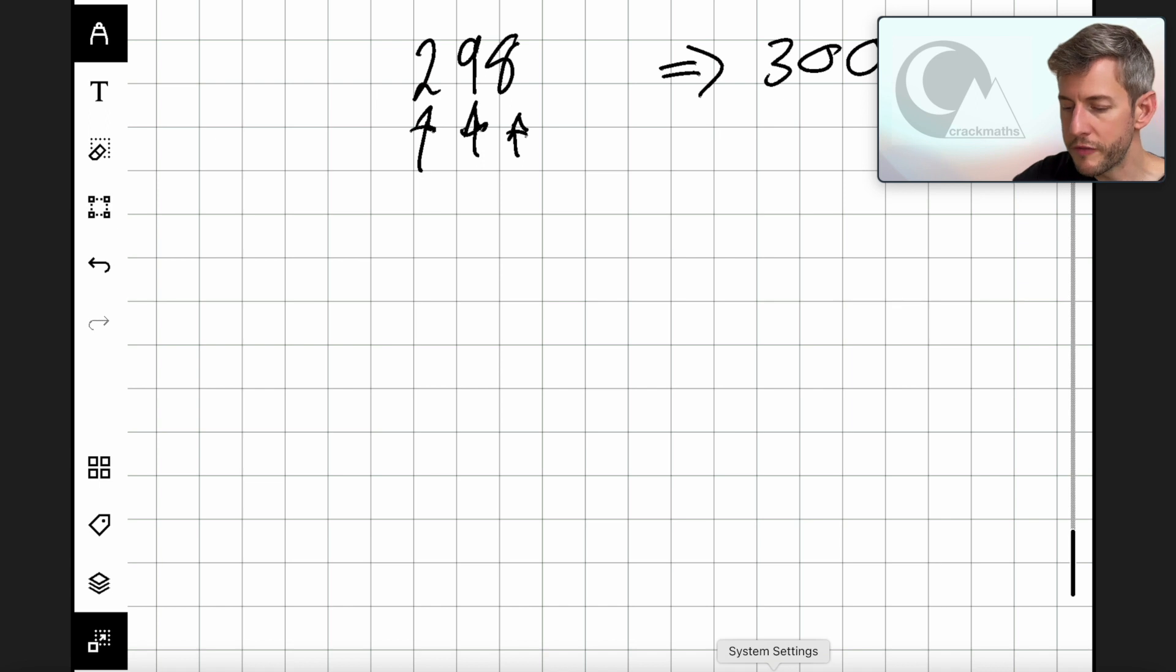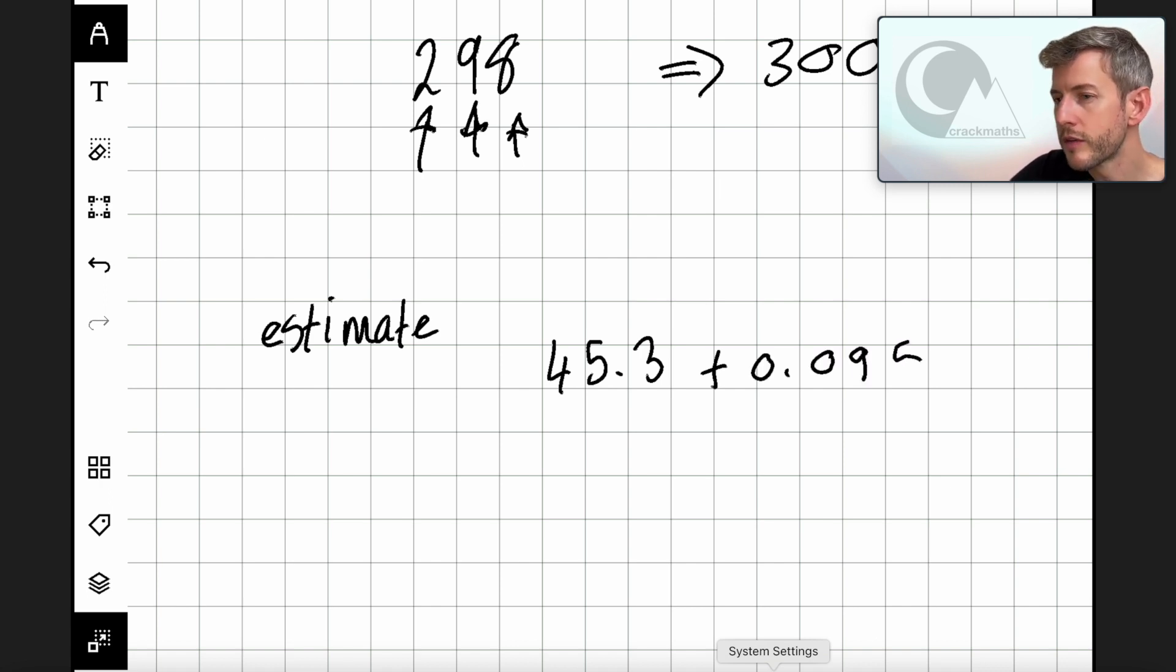So let's have a look at another situation. For example, we've got estimate 45.3 plus 0.095. So here, I know that 45.3, we've got to round it to the first significant figure, so we're going to round it to this 4. Now, if you're looking at a number and the number after it is a 5, then we round it up. So there's a phrase that you could say: 5 or above, you give it a shove. So we go 45, this is going to round to 50.